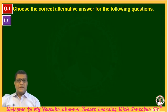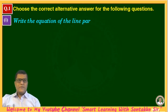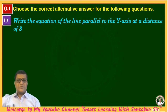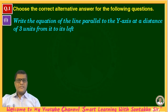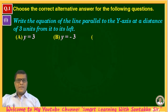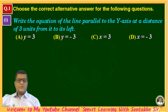First question is: write the equation of line parallel to y-axis at a distance of 3 units from it to its left. Options are: y = 3, y = -3, x = 3, and x = -3.